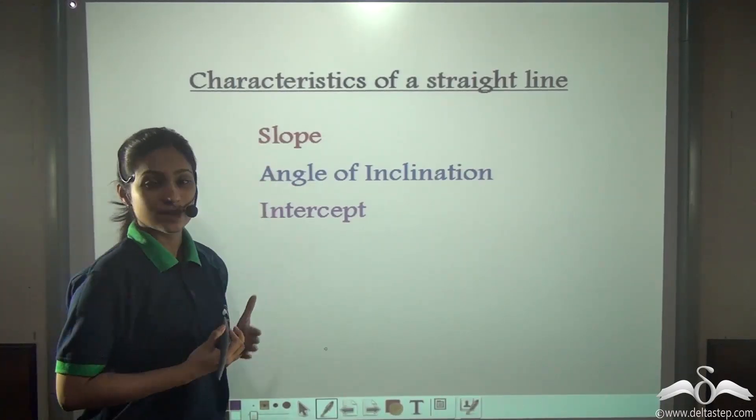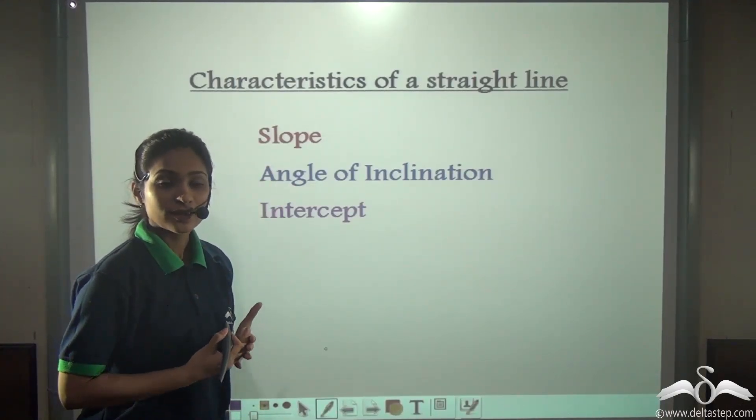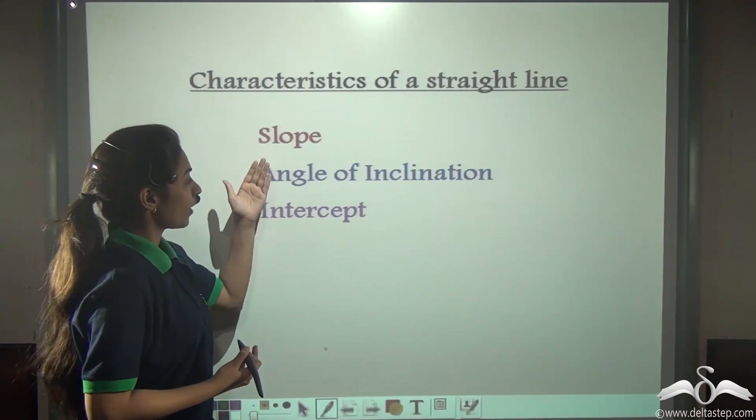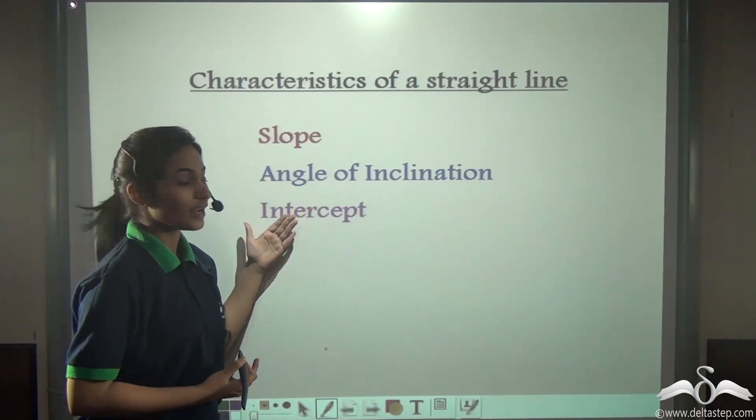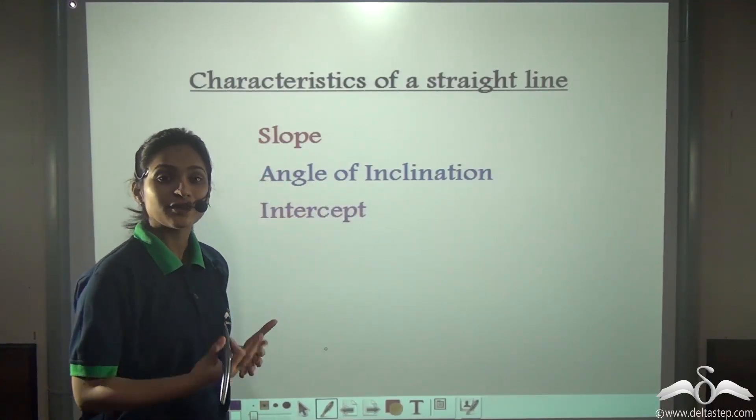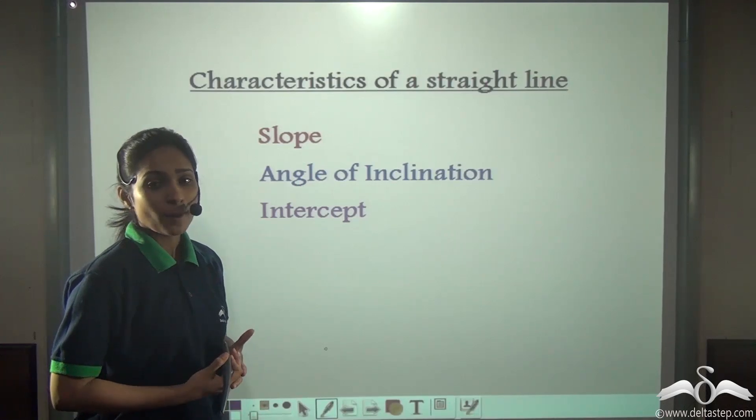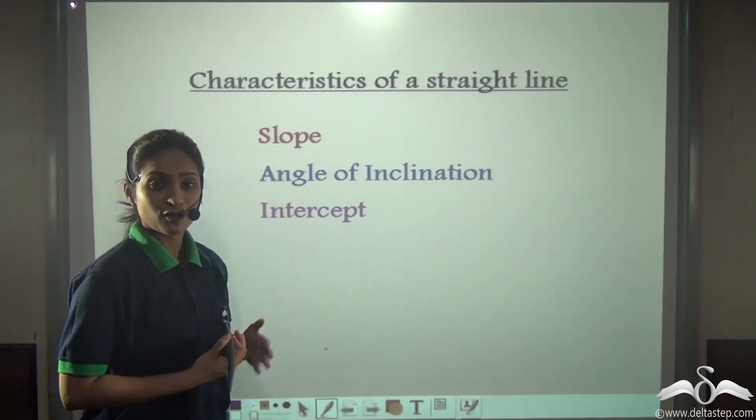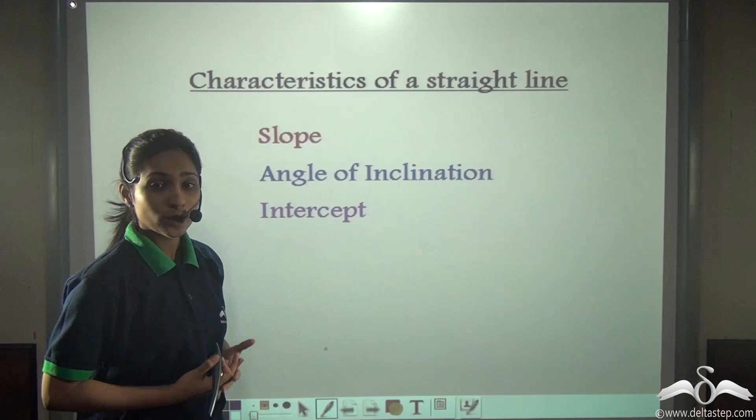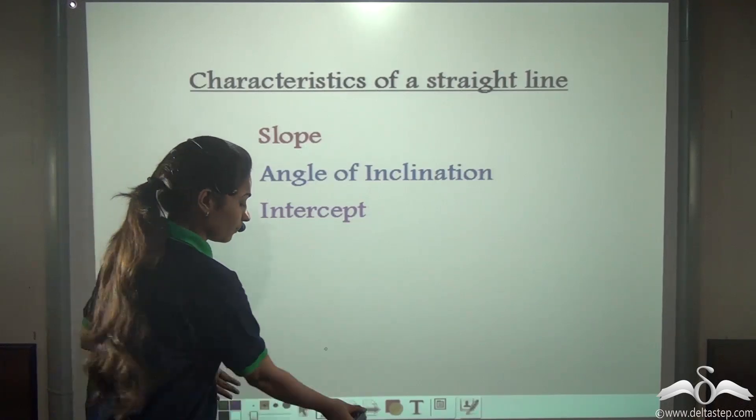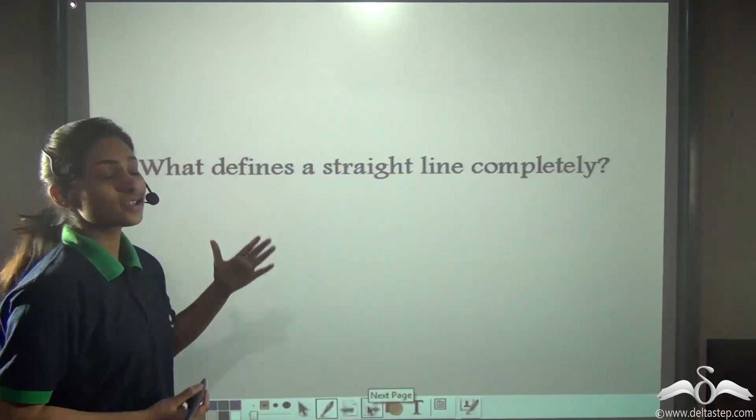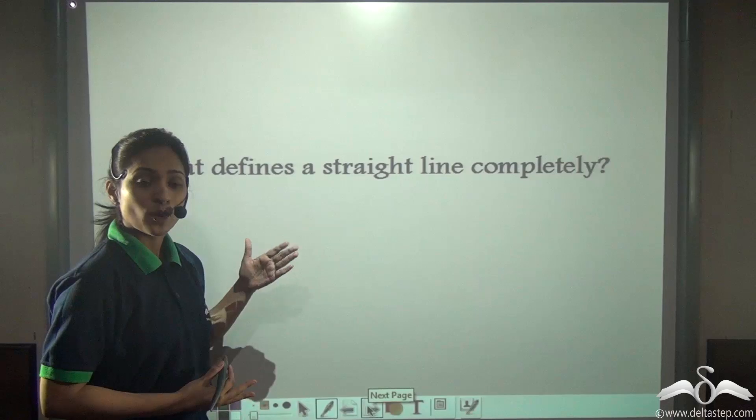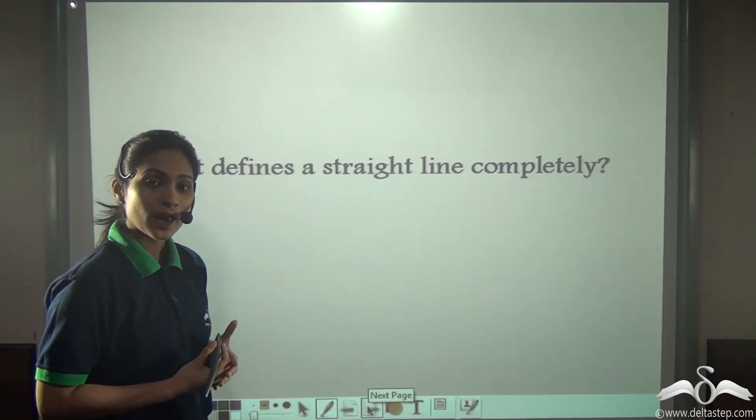What are the characteristics of a straight line? From the slope, angle of inclination, and intercept of a line, you can identify a line. But do you need all these three information to define a line? You need to ask yourself, what defines a straight line completely? Do I need all the information? Let's see.